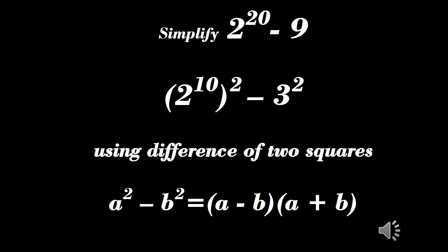Simplify 2 raised to power 20 minus 9. Since 10 times 2 equals 20, we have 2 raised to power 10, raised to power 2, minus 3 raised to power 2. Using difference of two squares, since we have minus in between the two squares: a squared minus b squared equals (a minus b)(a plus b).